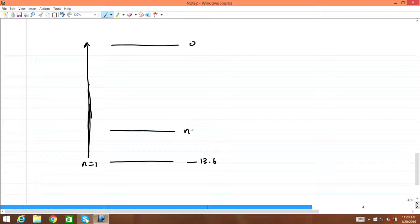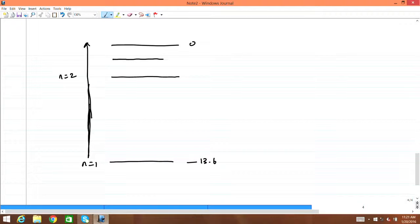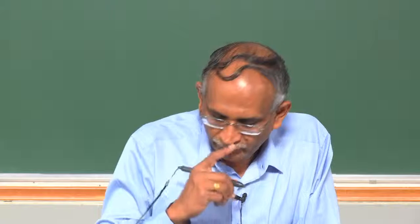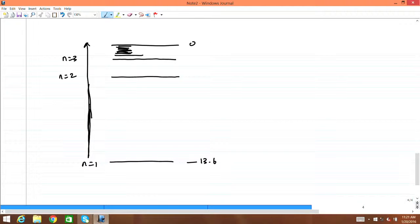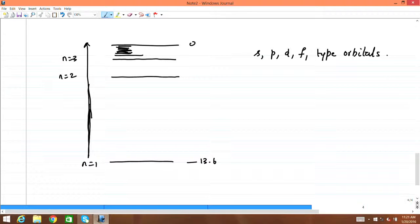So n = 2 is roughly at one-fourth, and n = 3 at one-ninth of the ground state energy. The energy levels become very dense as you go up, approaching 0 for infinitely large quantum numbers when the electron is completely free. The wave function picture leads to the familiar SPDF-type orbitals. In chemistry we have not yet needed g orbitals, as no element with sufficiently large atomic number requiring a g orbital has been discovered.